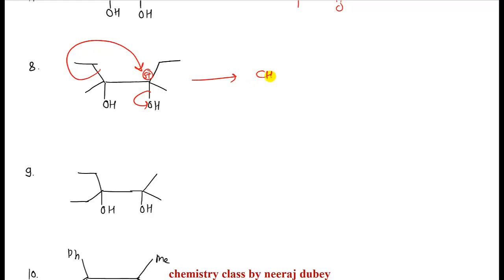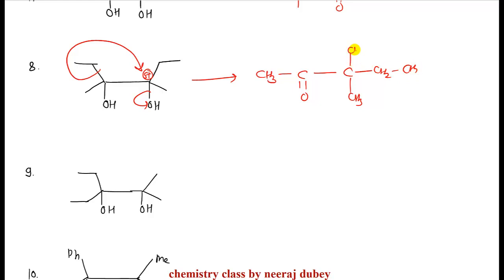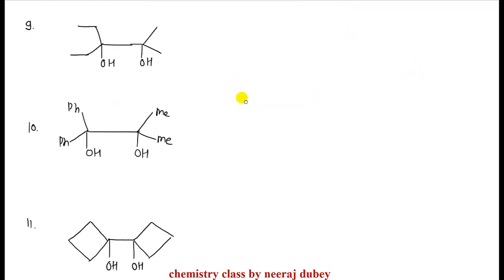Since ethyl has greater migratory aptitude, ethyl migrates. So the product is CH3-C(=O)-C(CH3)(ethyl)(ethyl) — one ethyl that migrated is now present. This product is formed. In the next example, the more stable carbocation forms on the right side.